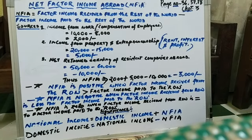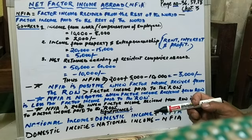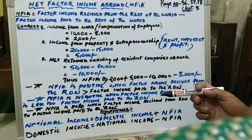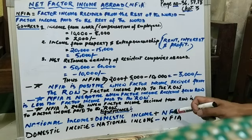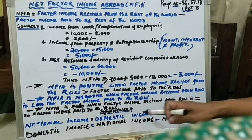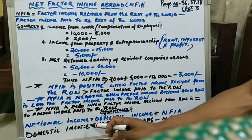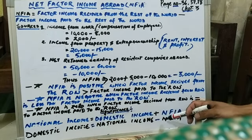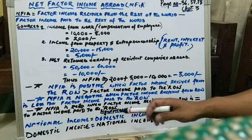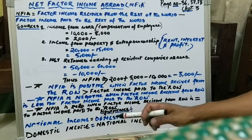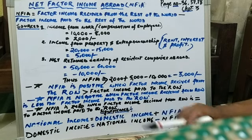The significance of Net Factor Income from Abroad is that it is used for differentiating between national income and domestic income. In order to arrive at national income, we add Net Factor Income from Abroad to domestic income. And in order to arrive at domestic income, we subtract Net Factor Income from Abroad from national income. These two formulas are very important, especially for the next chapter, so you should keep that in mind.